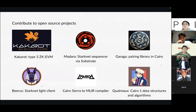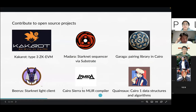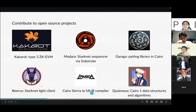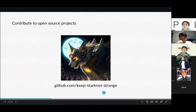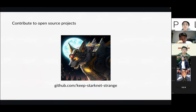Some examples of open source projects on the StarkNet ecosystem include ZKEVM — highly recommend looking into it, it's one of the hottest topics in the industry right now. There are also pairing libraries for cryptography, sequencer tools, and an MLIR compiler that will make Cairo a much more hardware-agnostic programming language. The best way to learn Cairo is to participate in projects and work on them directly. For those interested, go to github.com and search 'keep StarkNet strange' to find all these open source projects.